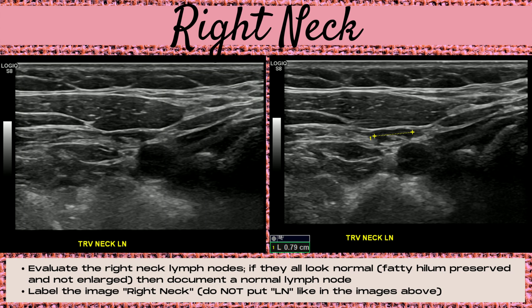Next, image the right neck. Evaluate all the lymph nodes on the right side of the neck. If they all look normal — meaning a thin hypoechoic outer cortex, a hyperechoic fatty central hilum, and not enlarged — then document one of the largest normal lymph nodes. Label this image 'right neck.' Do not put 'LN' (lymph node) like in the images above — this is a demonstration of what not to do.